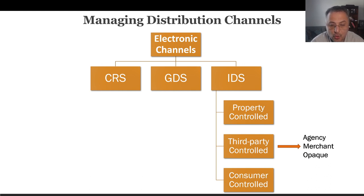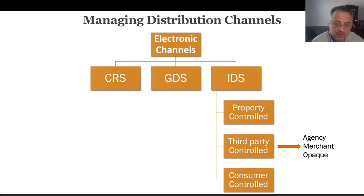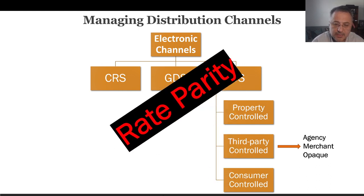However, we cannot ignore OTAs — they spent more on marketing than the entire hotel industry combined, about $3.2 billion. One thing major brands now try to control is enforcing rate parity, meaning the price OTAs can post on their site. This way, they try to control arbitrage, reference price, and referral site issues.